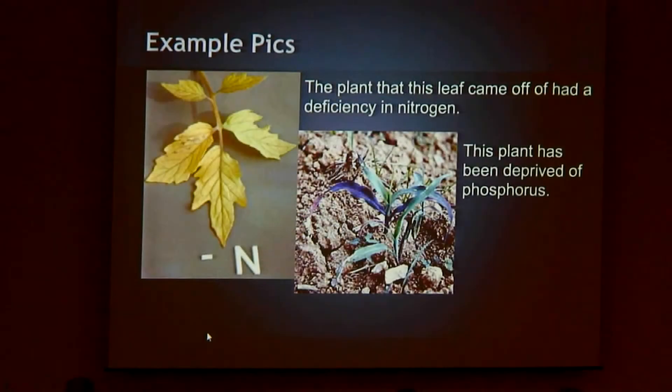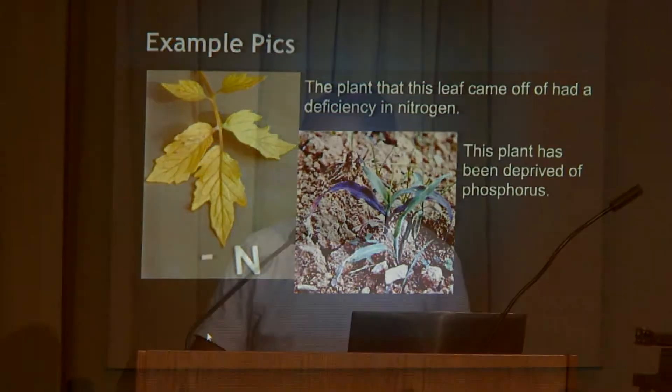These are some examples. The first plant has a deficiency in nitrogen. As you can see the purplish tinge in the one that's been deprived of phosphorus.